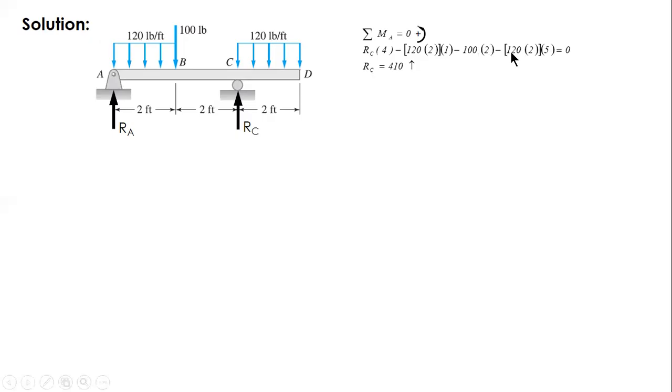If you have a uniform load, uniform distributed load, convert it first to a resultant force. And the resultant force is equal to the area of the diagram. So 120 times 2. That is the resultant. You will get RC equal to 410 upward. And for RA, you just sum up force along the vertical. You will have 170.